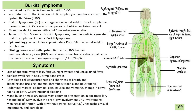Types of Burkitt's Lymphoma include endemic, also known as African, which deeply affects children in Africa and is often associated with malaria. It commonly presents as a jaw lesion.